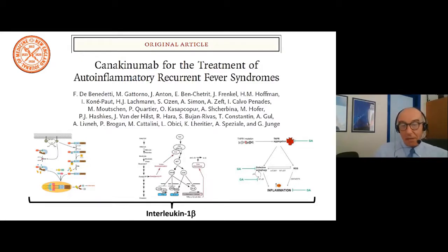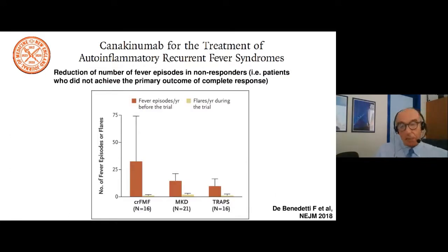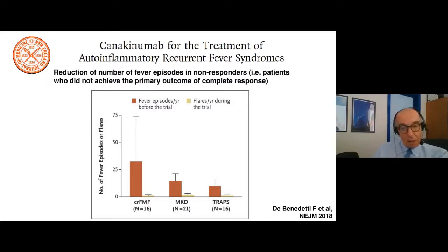This led to the design of a basket trial a few years ago aimed at antagonizing IL-1. From this basket trial we learned that whatever the mechanism is, if your target is IL-1, you respond to IL-1 inhibition. We have learned about IL-1-beta-mediated autoinflammatory diseases, and also about interferon-mediated autoinflammatory diseases — there are diseases caused by type 1 interferon hyperactivation as well.